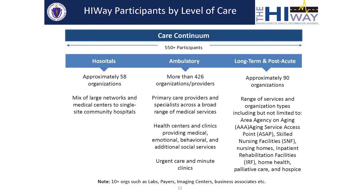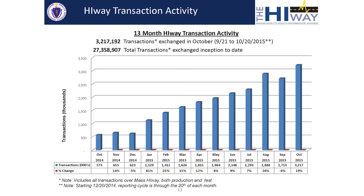Here is a quick overview of how the 550-plus organizations are broken down by type: about 58 hospitals are connected, 426-plus ambulatory organizations, and about 90 long-term care facilities. In addition, we have more than 10-plus other organizations, including insurance companies on Mass Highway who are receiving patient information from their respective providers, and some labs. We are now at about 3.2 million transactions per month — that's how many messages are being sent on the highway across all 550 organizations.